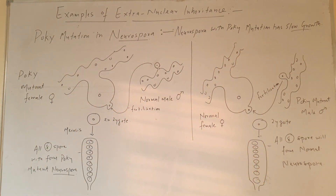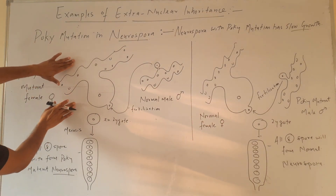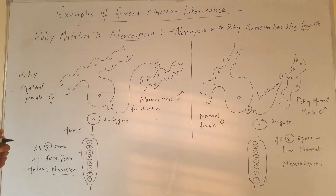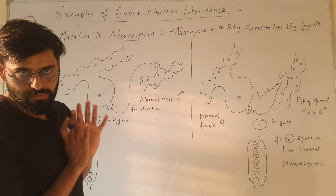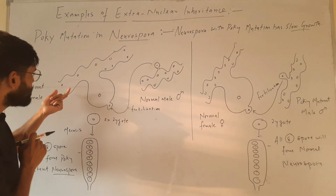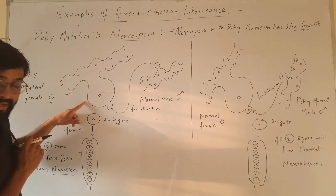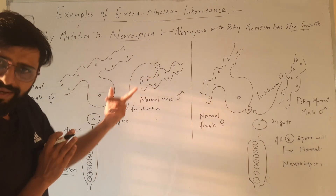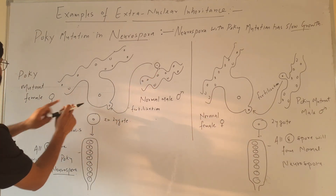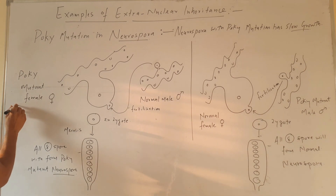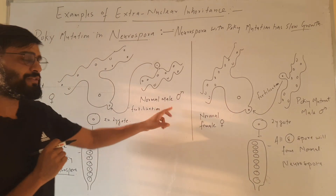Now look at our example. This is female Neurospora and this is male Neurospora. This female Neurospora is forming egg and it is forming male gamete. This female has poky mutation and this male is normal.